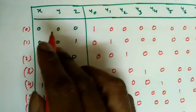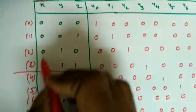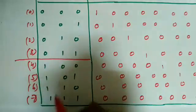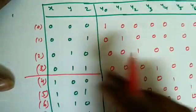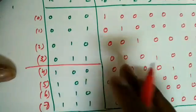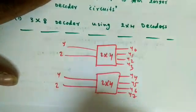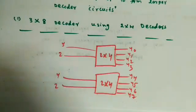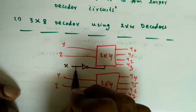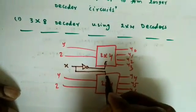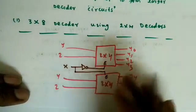Looking at the 3x8 truth table with inputs x, y, z: the table splits into two halves. In the first half, x is constant at 0; in the second half, x is constant at 1. So y and z become the two data inputs to each 2x4 decoder, and x becomes the enable input. For x=0, the upper decoder works; for x=1 (x complement), the lower decoder works.